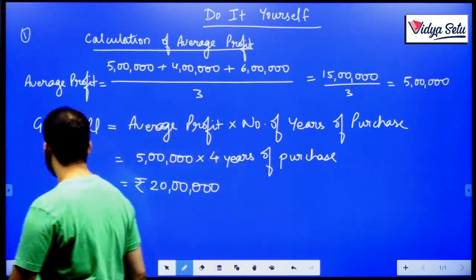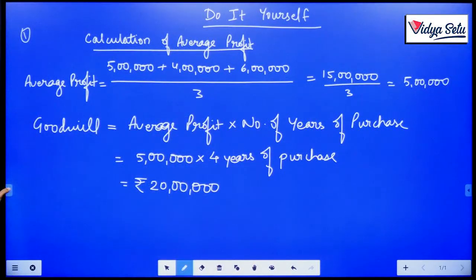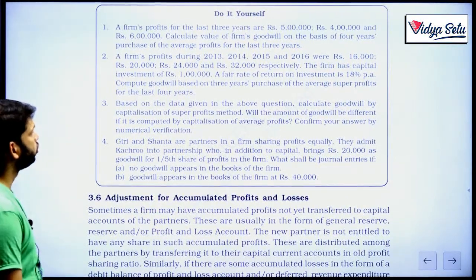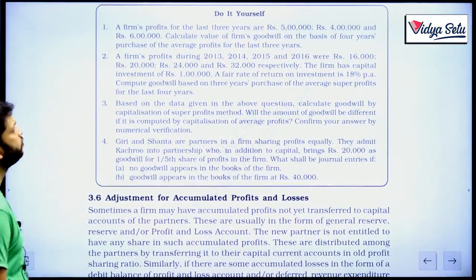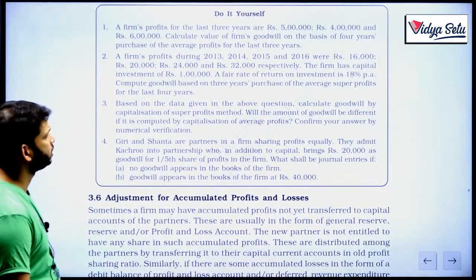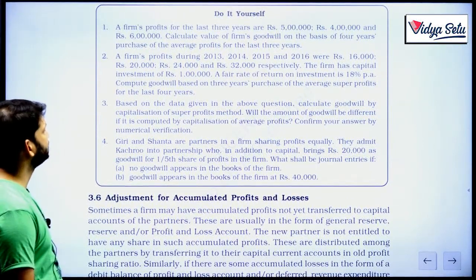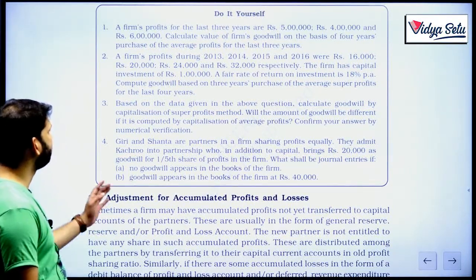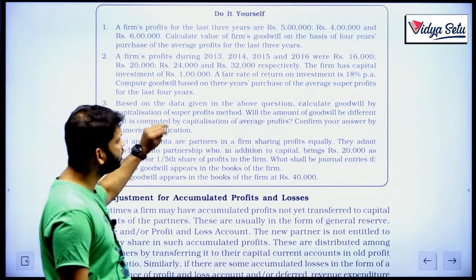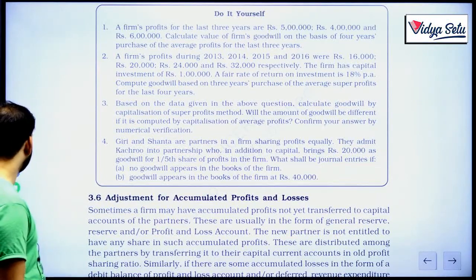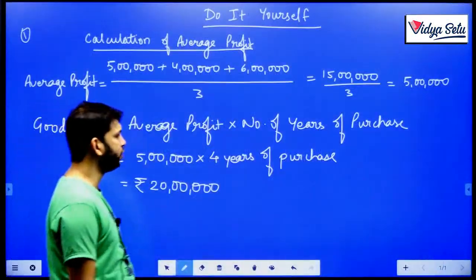Now let us look at question number 2. A firm's profit during 2013, 14, 15 and 16 were 16,000, 20,000, 24,000 and 32,000 respectively. The firm has a capital investment of rupees 1 lakh. A fair rate of return on investment is 18 percent. Compute goodwill on the basis of 3 years purchase of the average super profit of the last 4 years. So this we have to do by the super profit method.